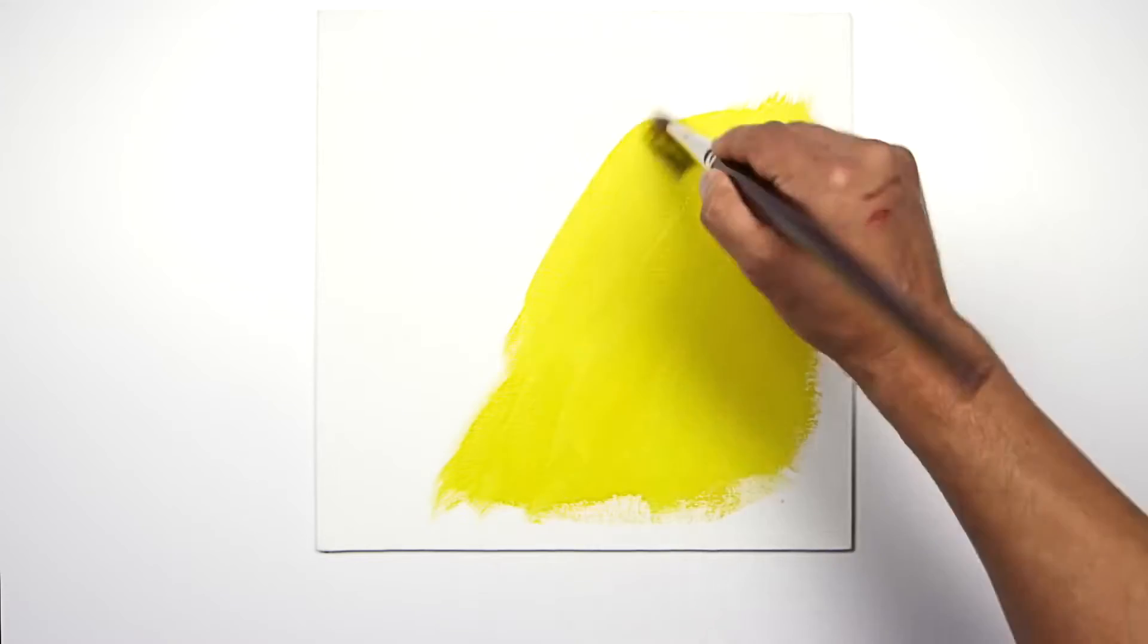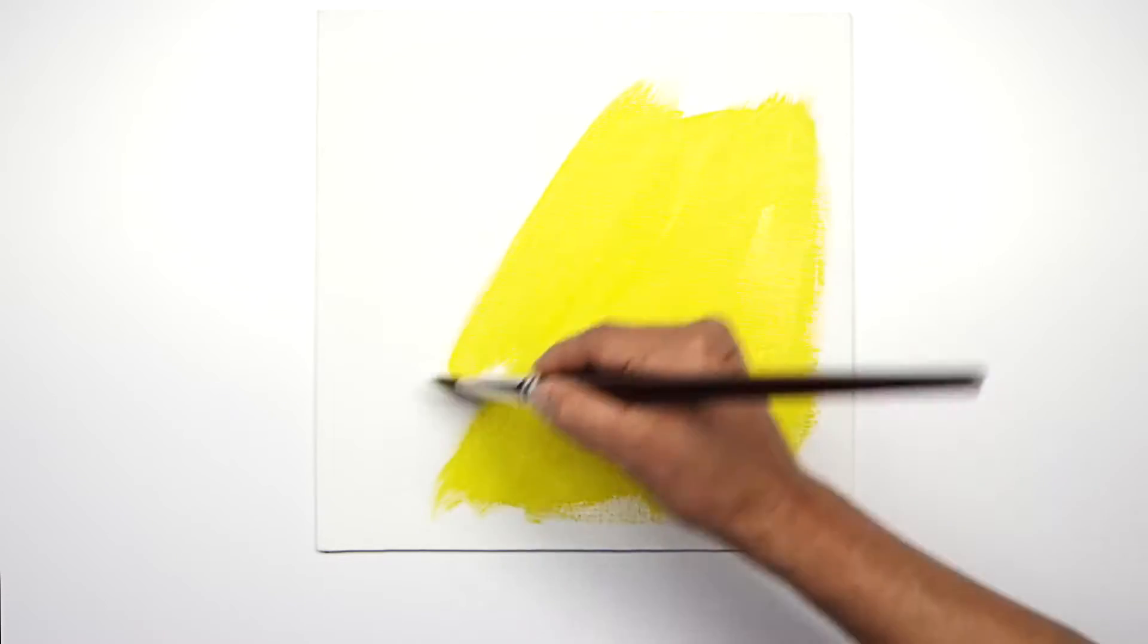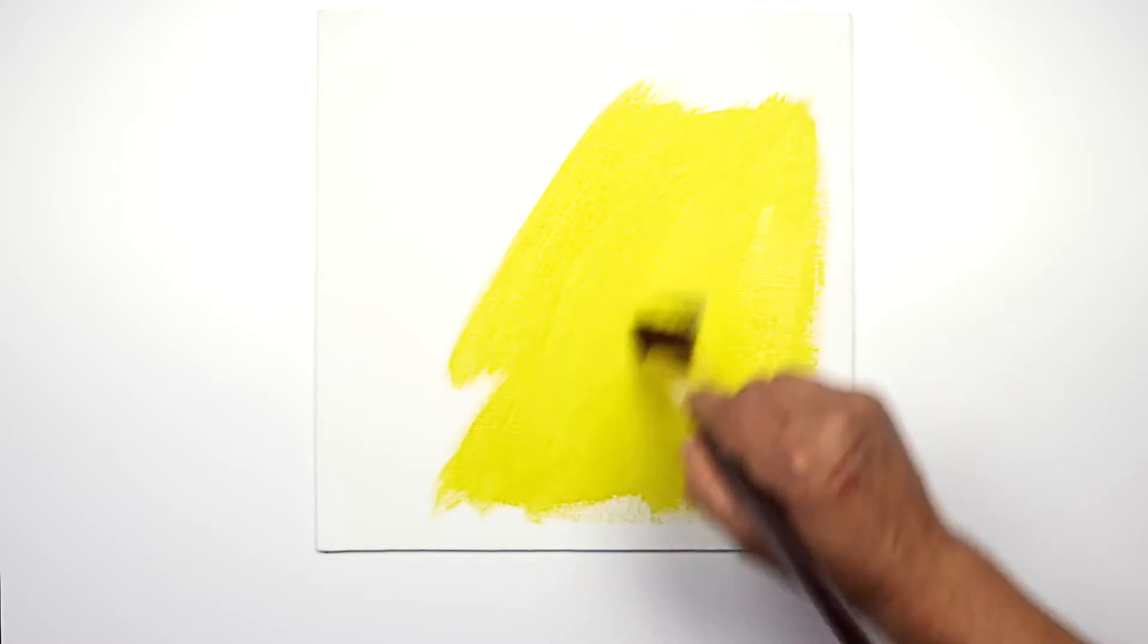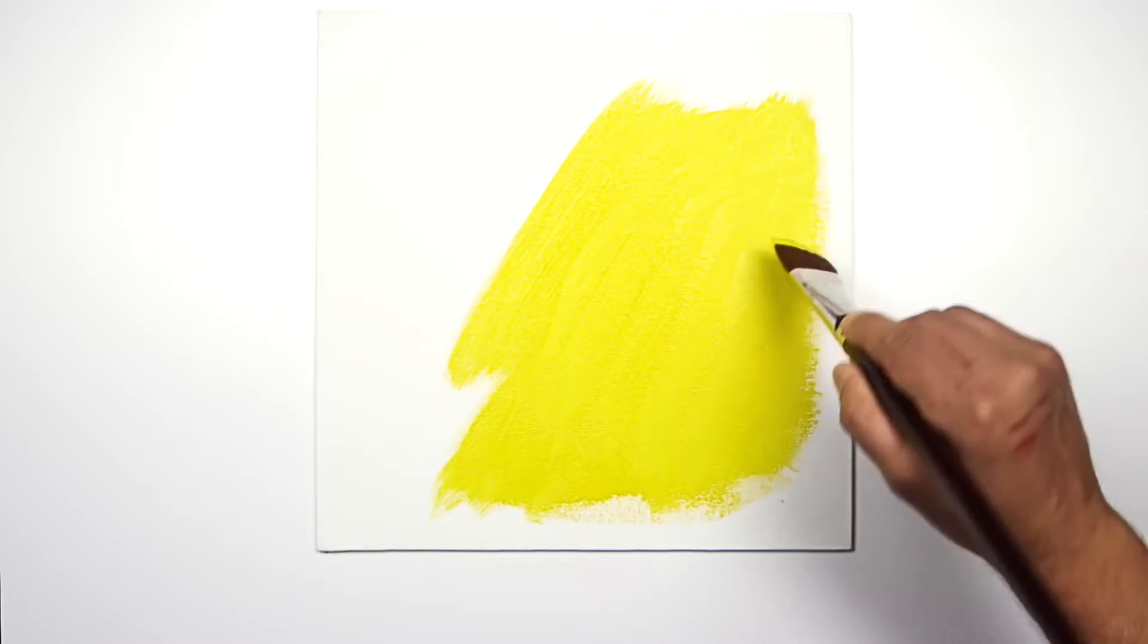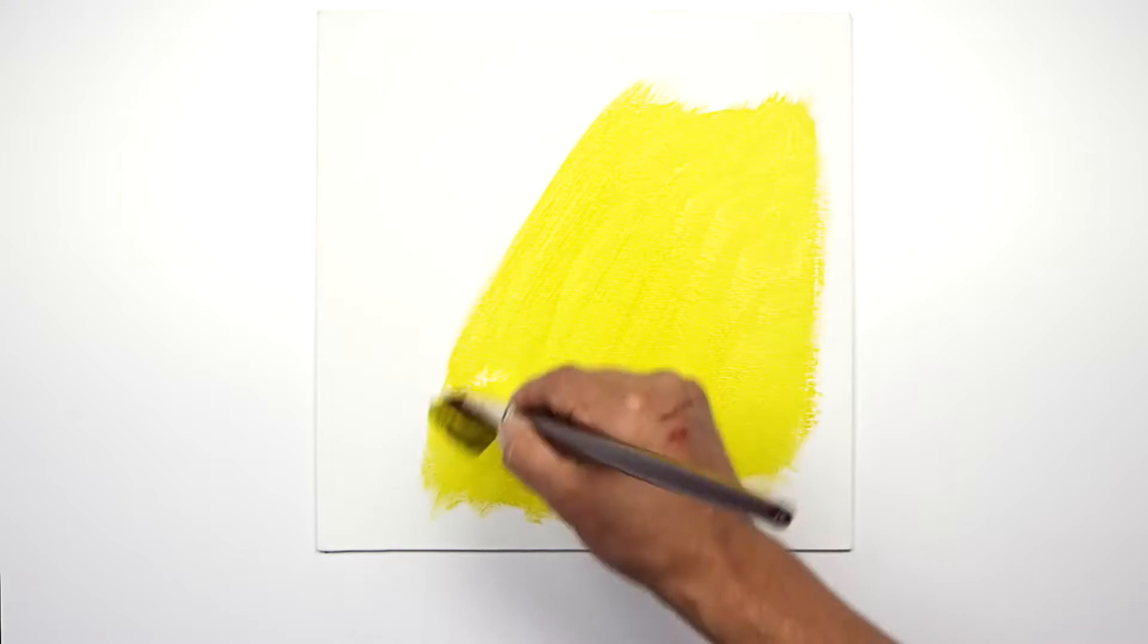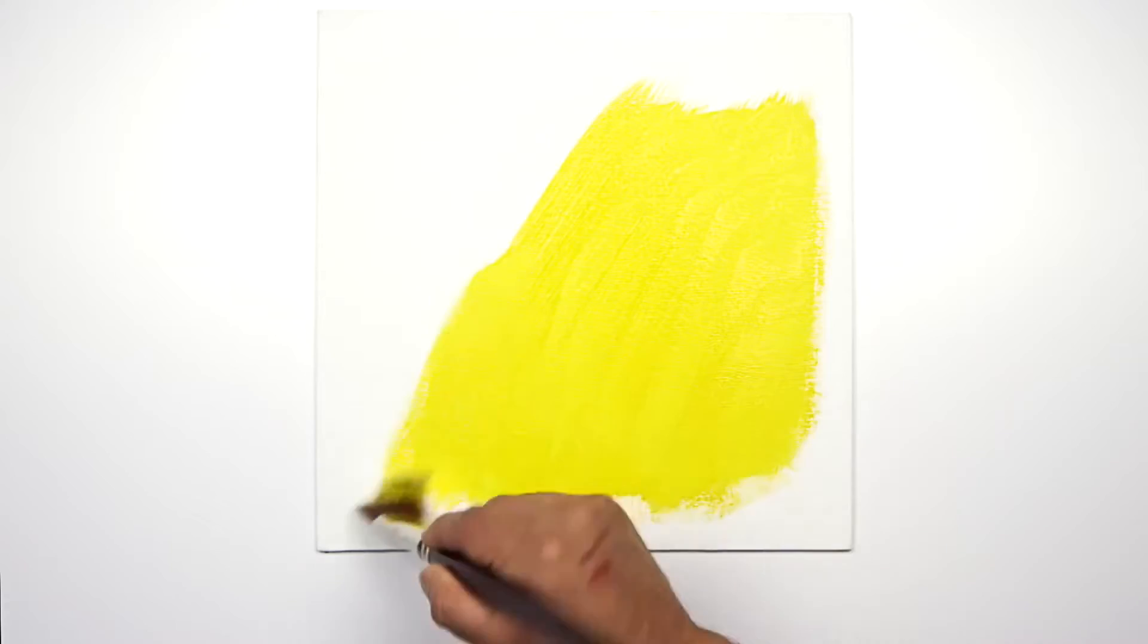When diluting the paint for the application of acrylics in this technique, I'm also using matte medium and not just water so as not to underbind the paint. I've also added a few drops of flow aid to the water that I'm diluting the paint with.